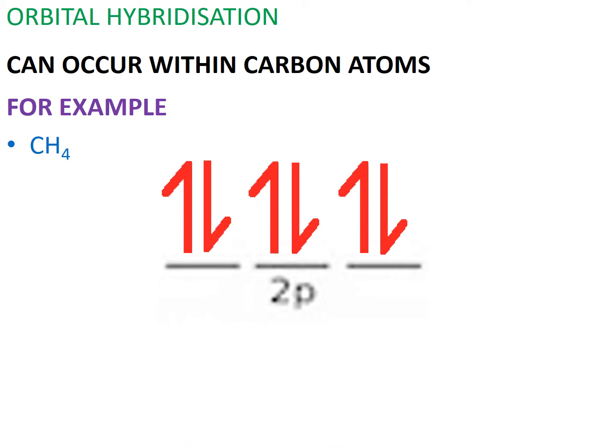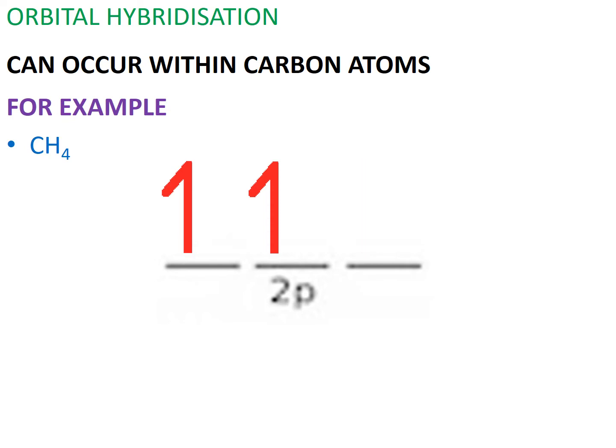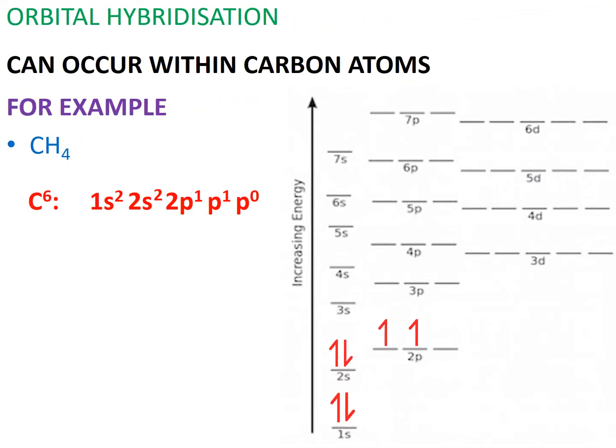Atoms can reach some level of stability if a subshell is filled with electrons or half-filled with electrons, not partially filled with electrons as seen with carbon. Carbon's 2p subshell can be half-filled if one of the electrons in 2s absorbs enough energy and gets promoted, or jumps, into a higher energy level, which is one of 2p's orbitals.